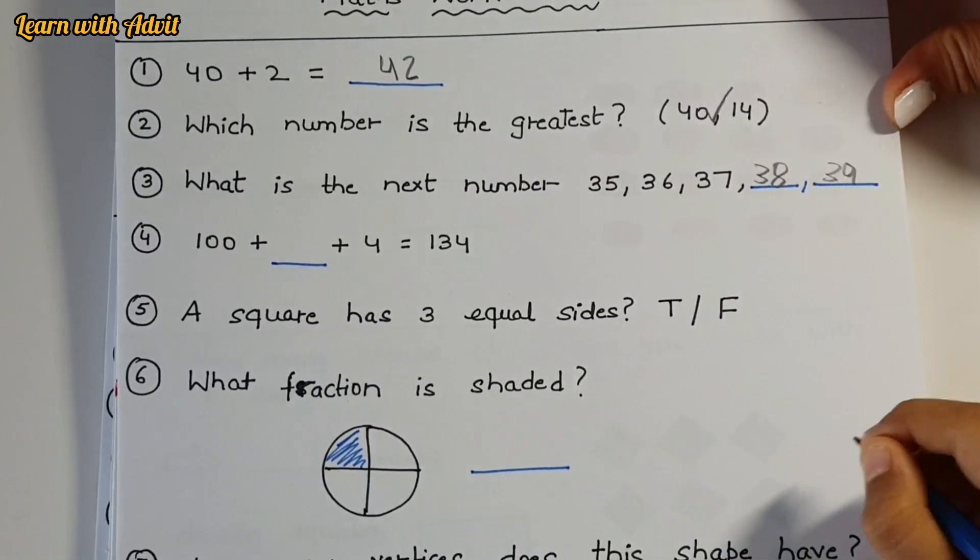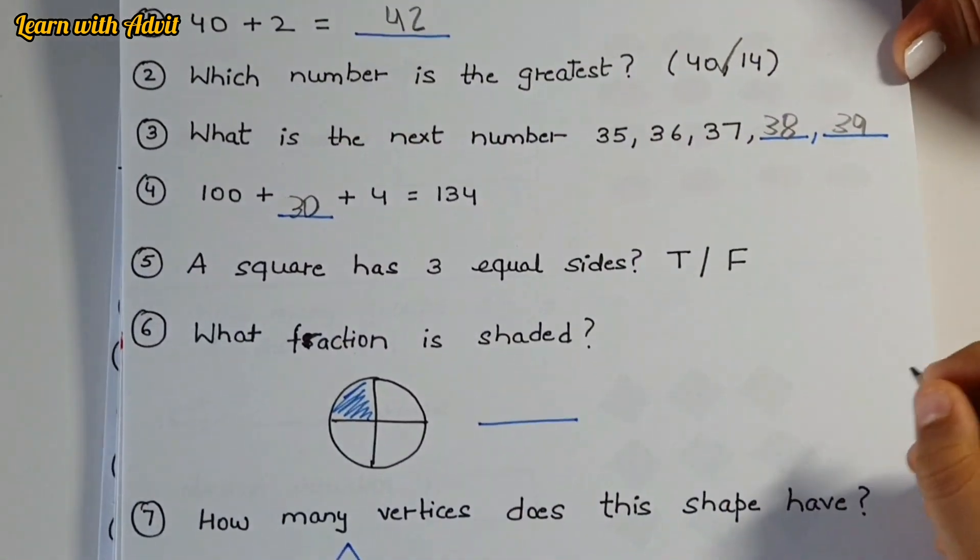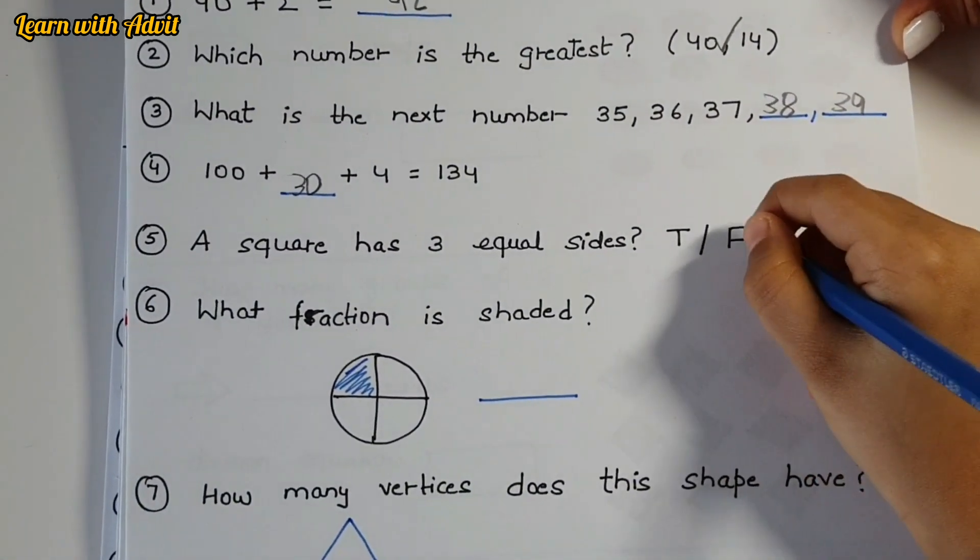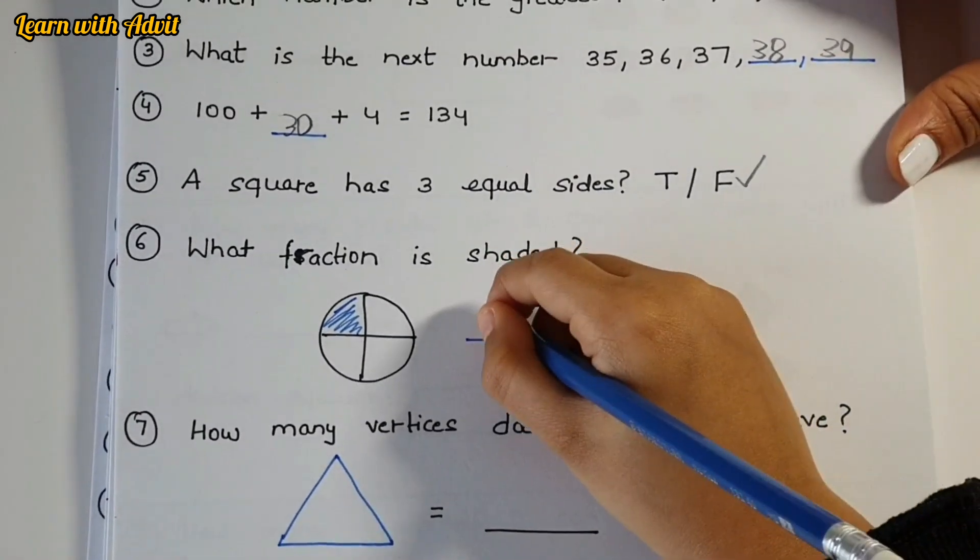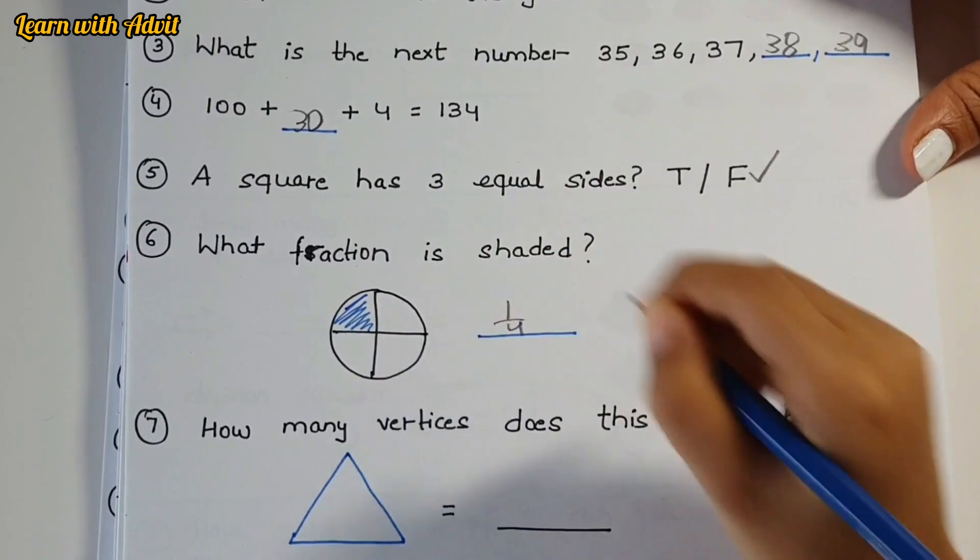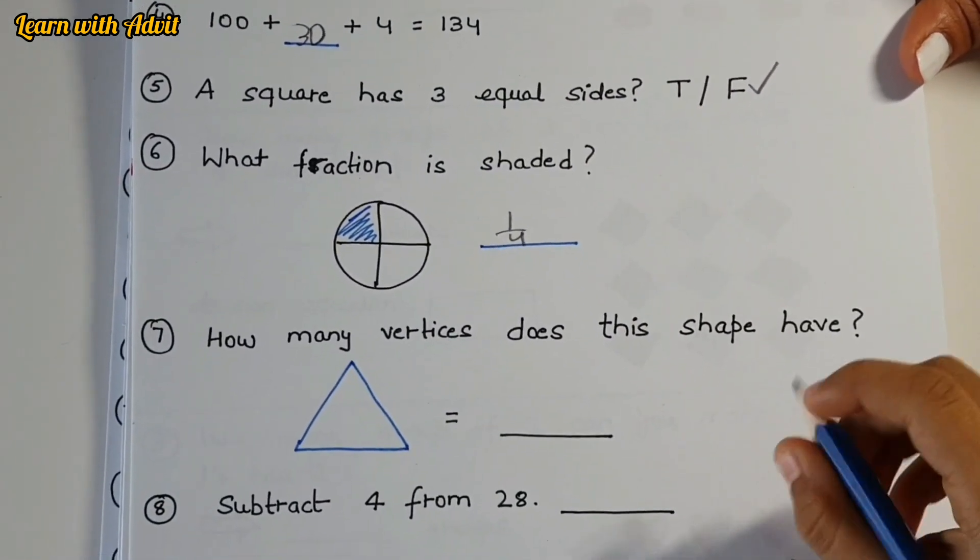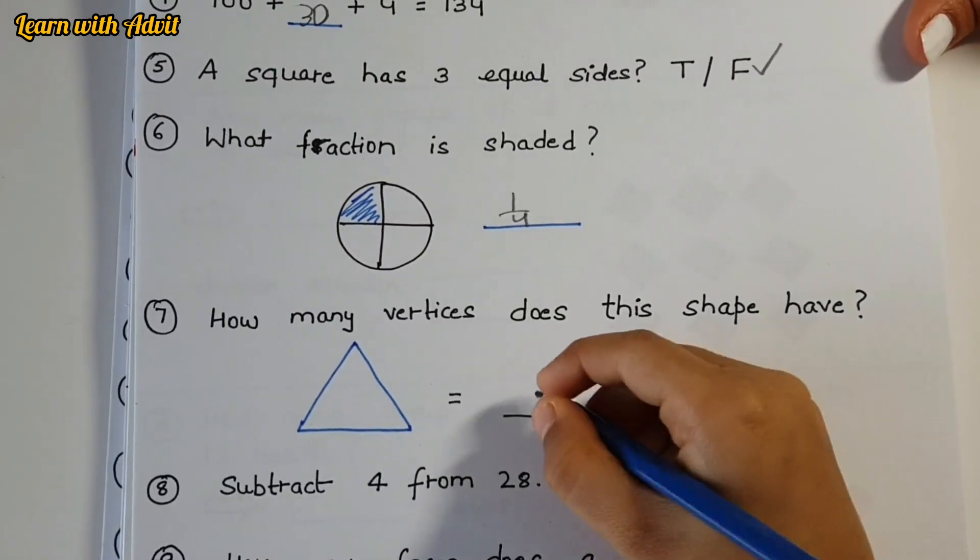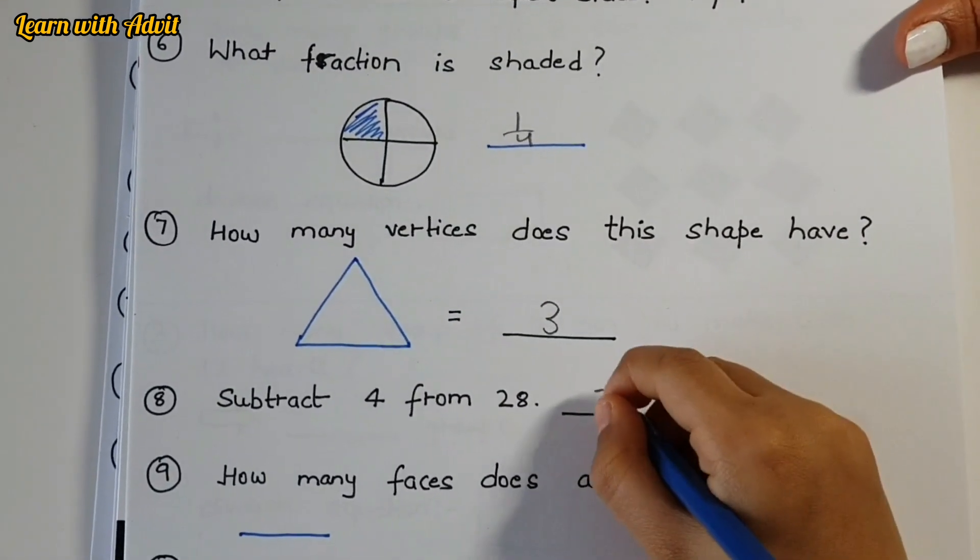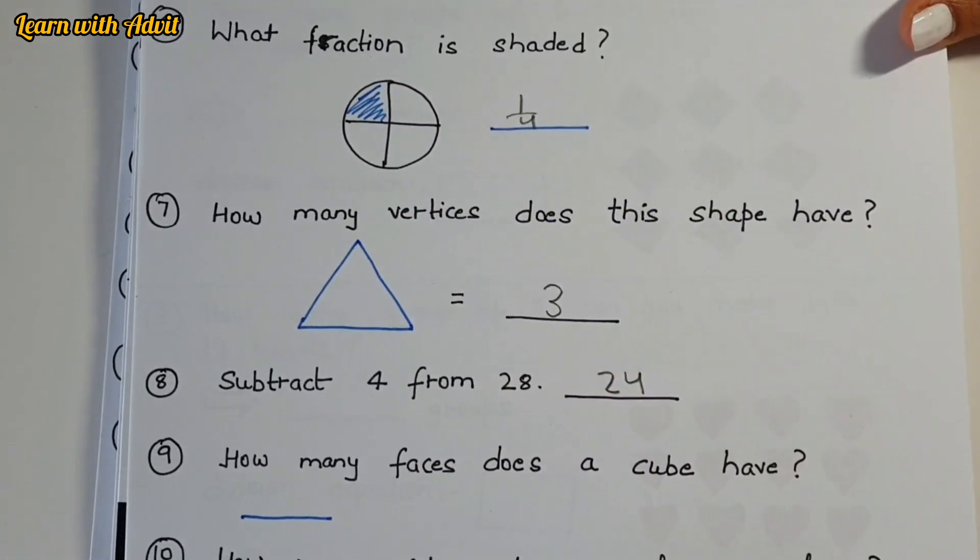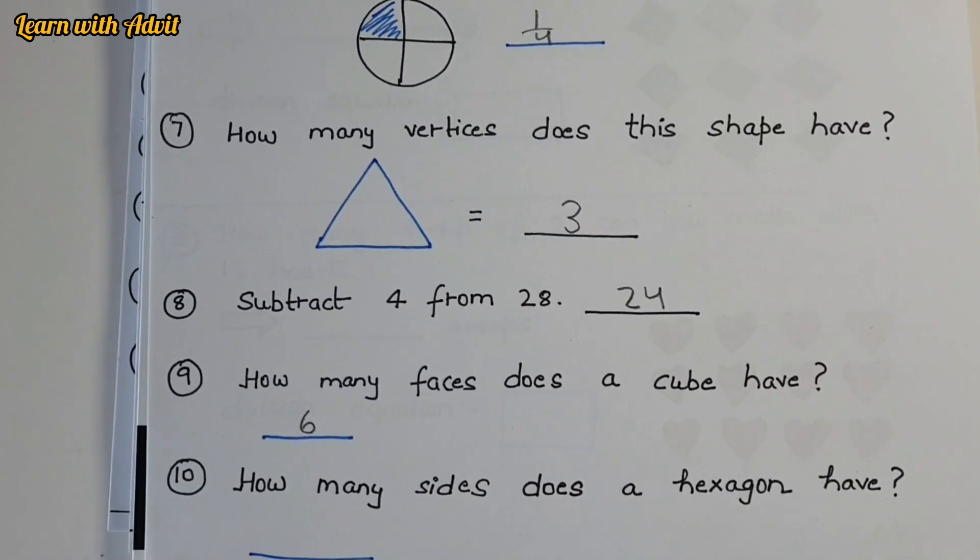100 plus dash plus 4 is 134, so what is missing? Yeah. A square has three equal sides, true or false? No, it has four, very good. What fraction is shaded, 1/5 or 4/5? How many vertices does this shape have? Three, it's a triangle. Subtract 4 from 28 - 24.